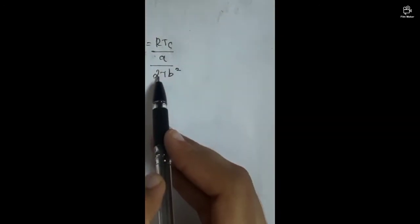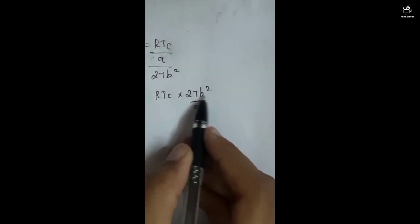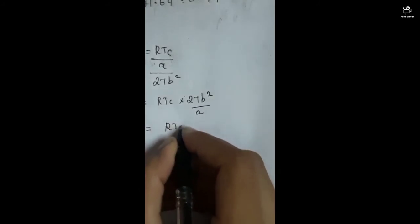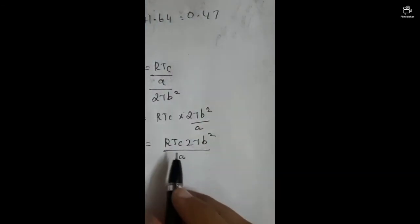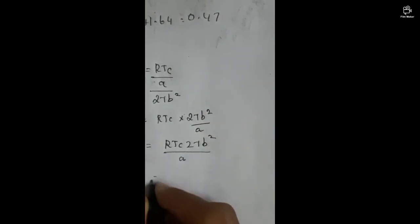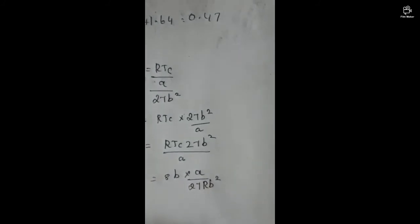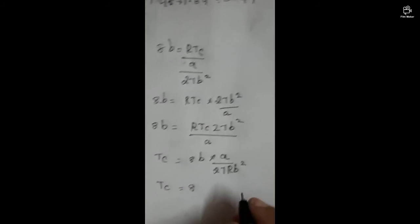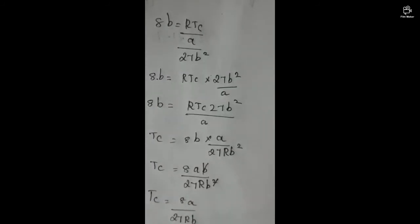From the critical condition equations, we derive: 27b² = RTc/a, which gives us the critical temperature Tc = 8a / (27Rb).